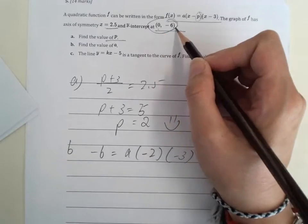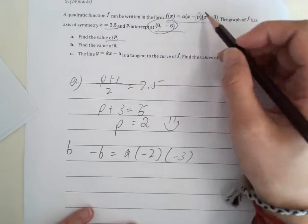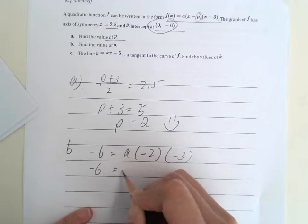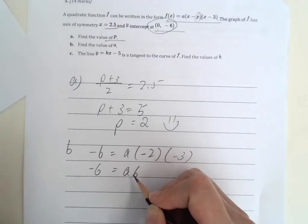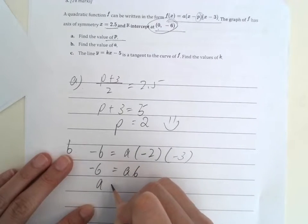I would substitute 0 and negative 6 to x and y. So we have negative 6 equals to A6. So A should be negative 1.